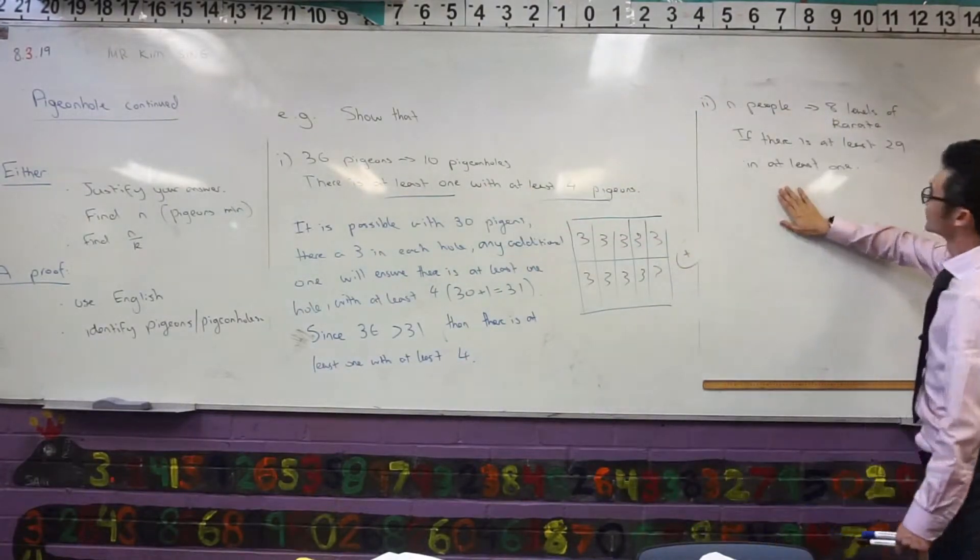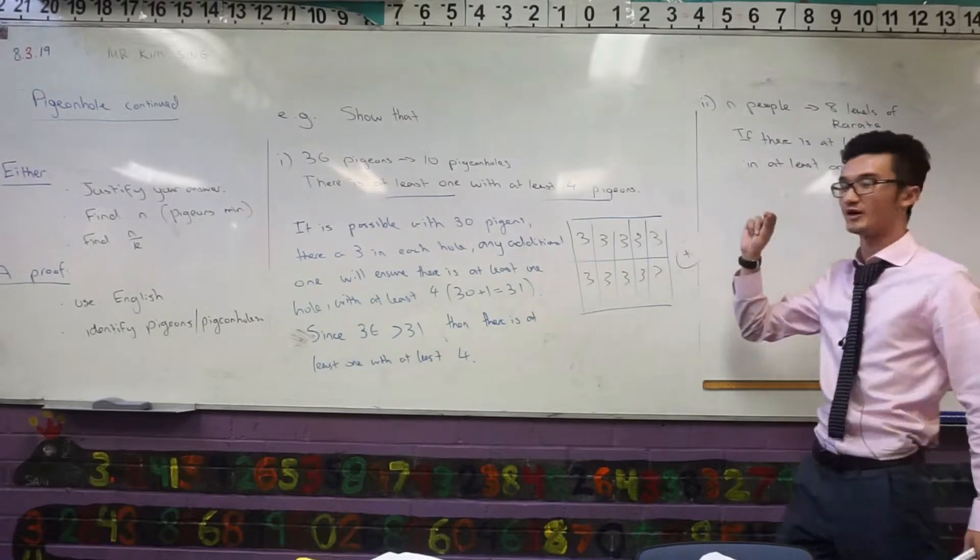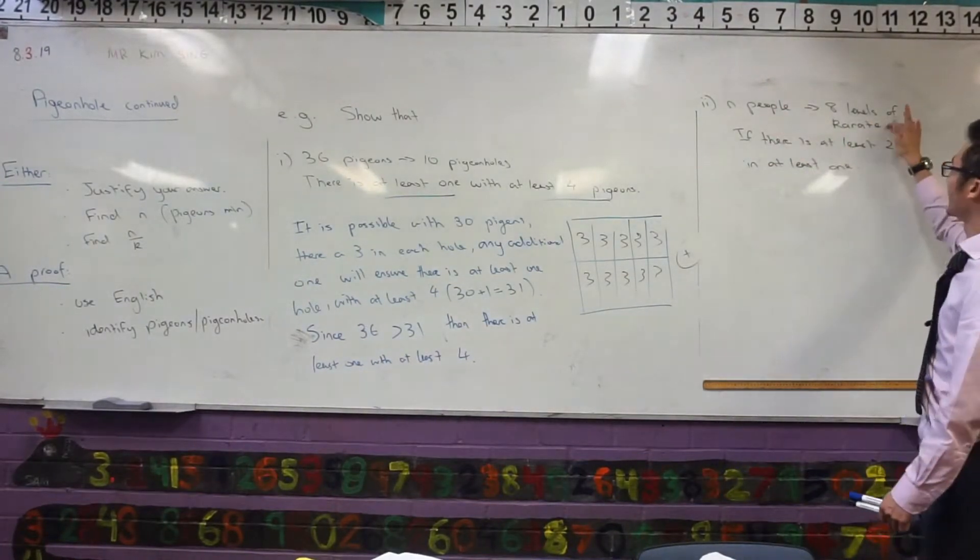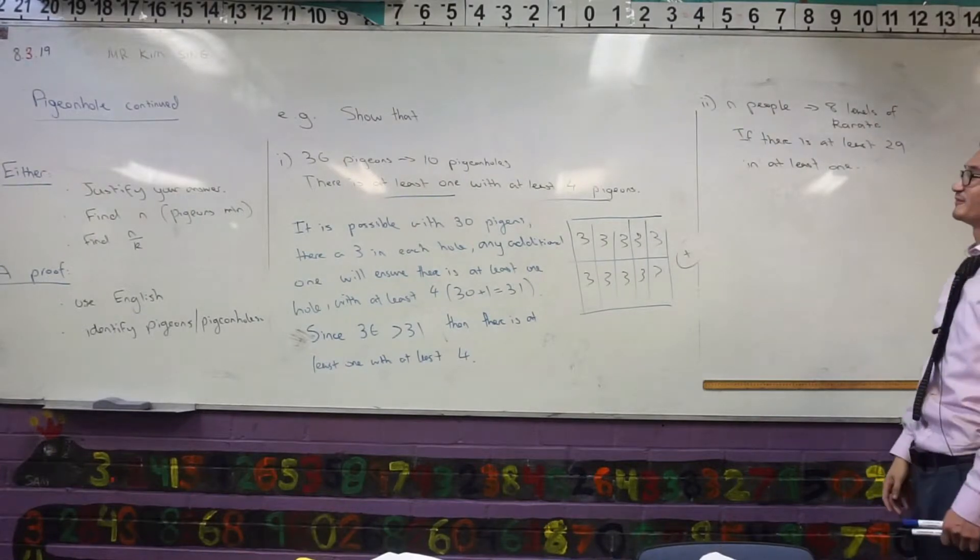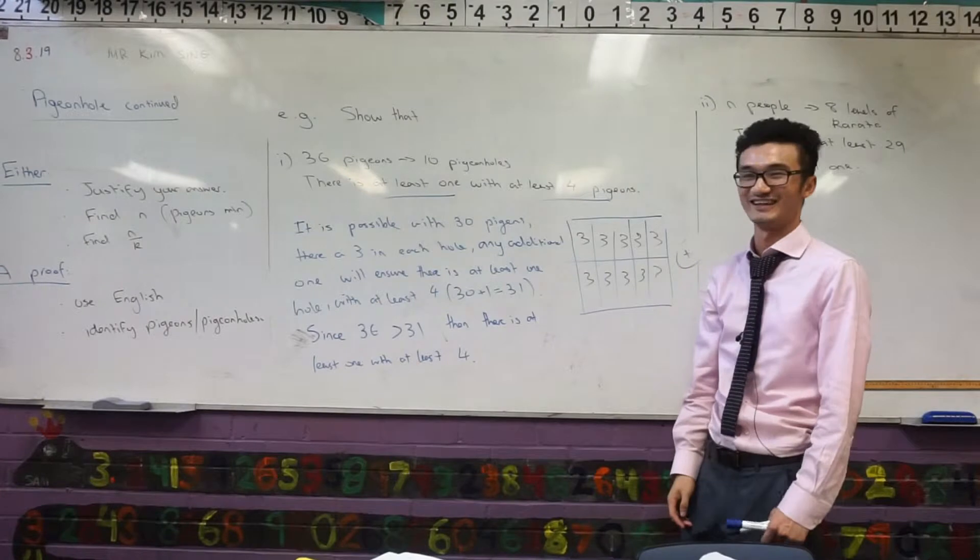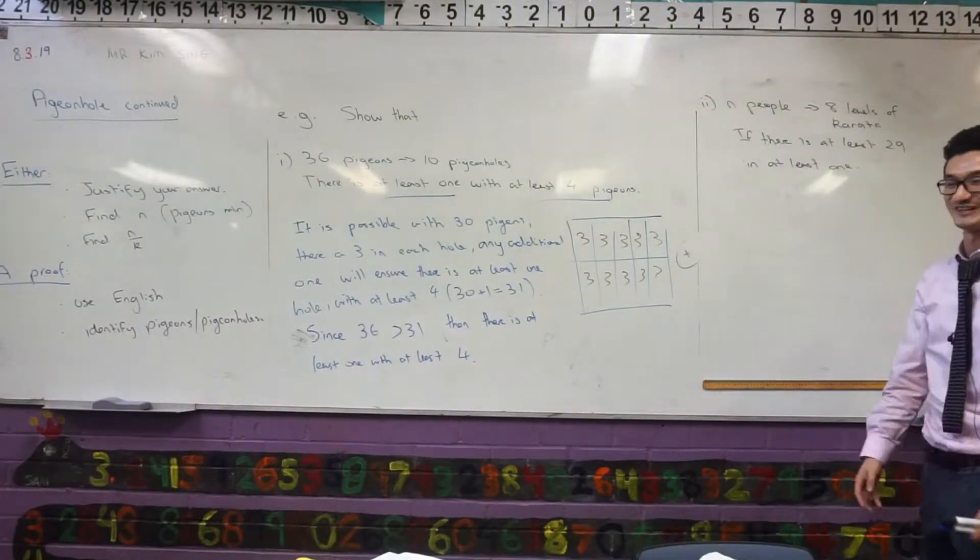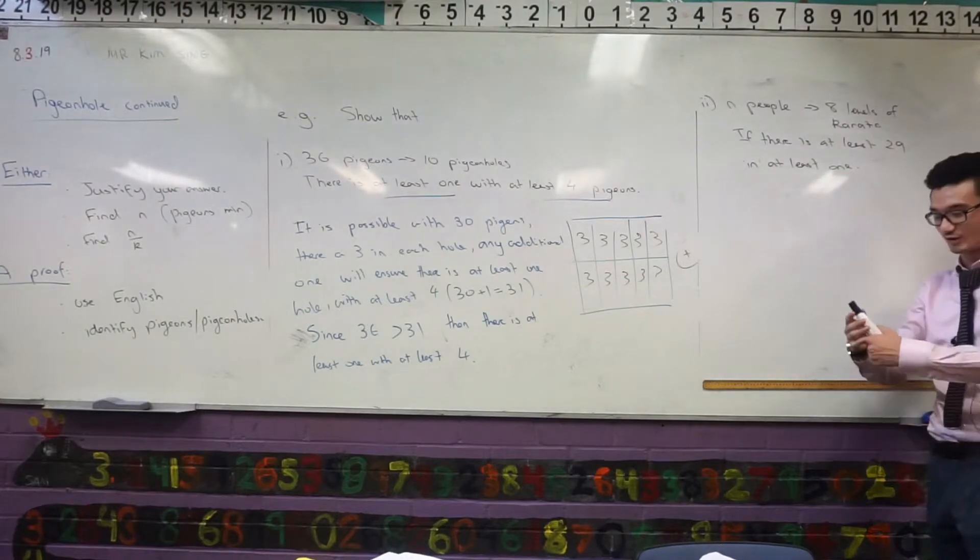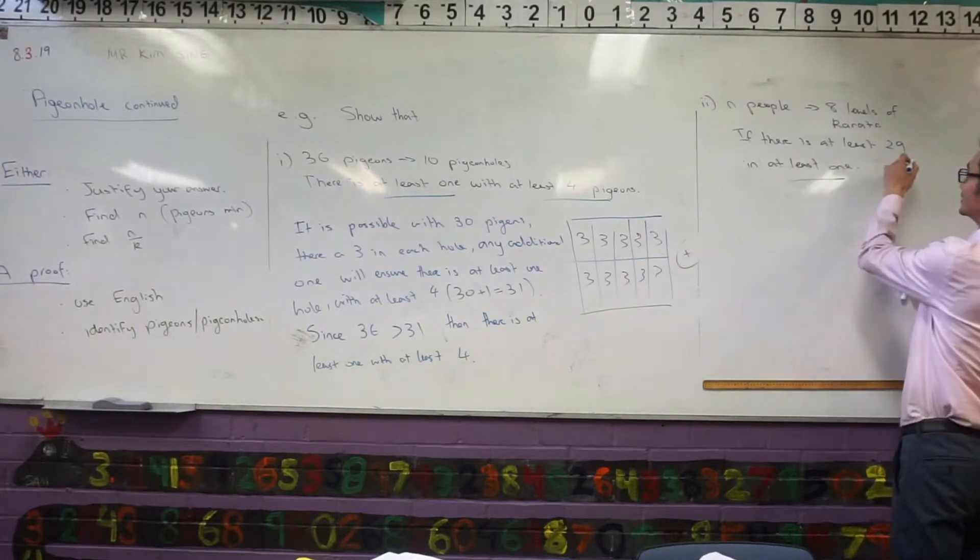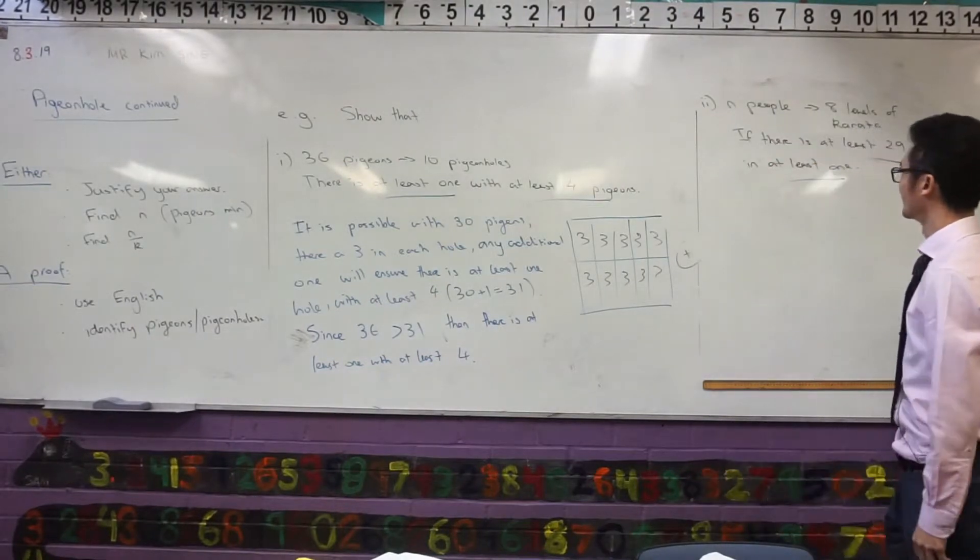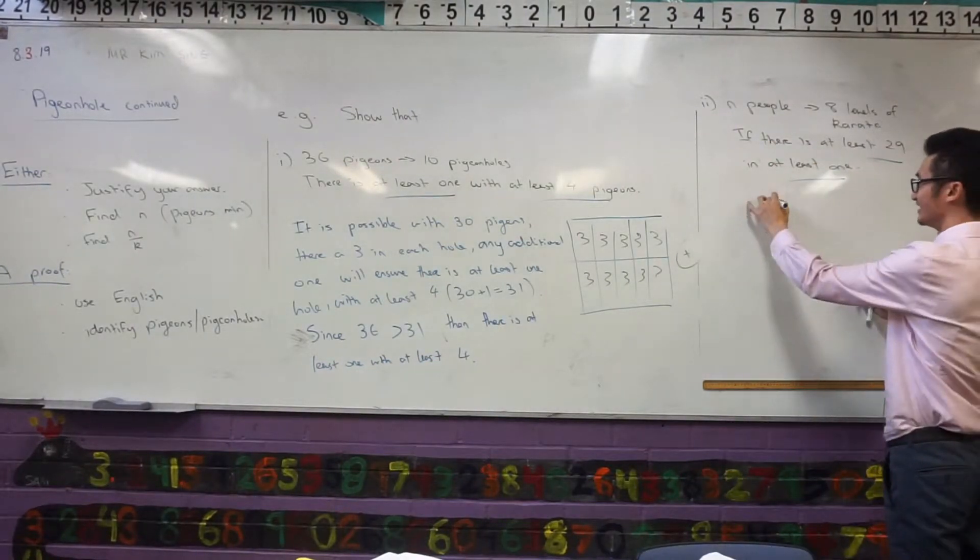But for something like this, there is no justification required, all I'm asked is to find, if I'm assigning N people to eight levels of karate. I was probably like the Nubis level, what's the Nubis level, like white belt? I was like a white belt, I think I did it for like a month. If there's at least 29 in at least one, the easy thing to do here would just be, well if there's 29 in at least one, I can just do 29 times 8.